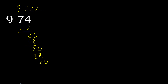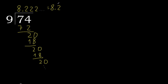74 divided by 9 is here. After the decimal point, 2 repeats — therefore the answer is written like this, with the 2 repeating.